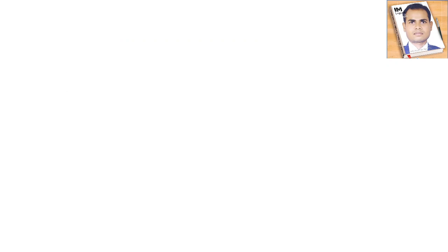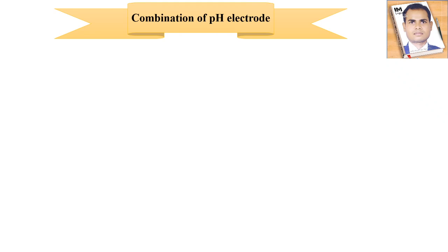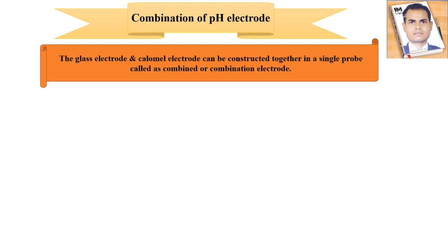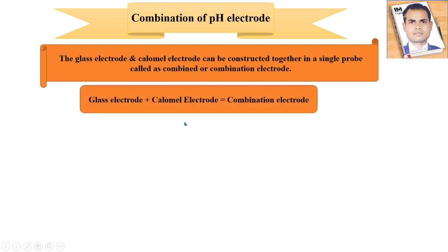Next topic is the combination pH electrode for measurement of pH or hydrogen ion concentration. For the pH instrument, we can connect a combination pH electrode. This is the glass electrode and calomel electrode — both can be constructed together in a single unit. Both electrodes are present at one place, and we call them a combination pH electrode, also known as the combined electrode. So: glass electrode plus calomel electrode equals a combination electrode or combined electrode.